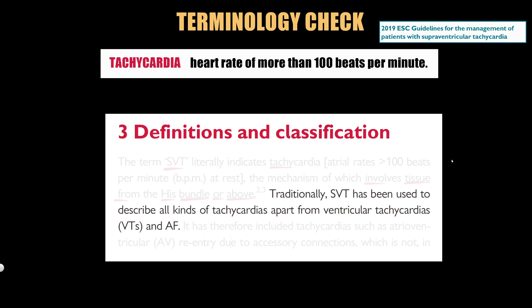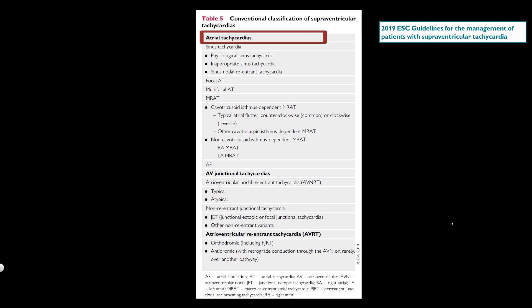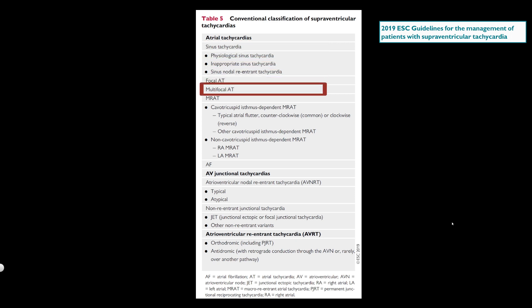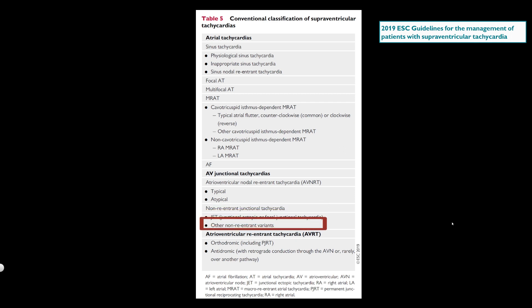Traditionally, SVT has been used to describe all kinds of tachycardias apart from ventricular tachycardias and atrial fibrillation. So SVT includes different types of atrial tachycardias, AV junctional tachycardia — which can be AV nodal reentrant tachycardia or non-reentrant junctional tachycardia — and atrioventricular reentrant tachycardia, or AVRT.